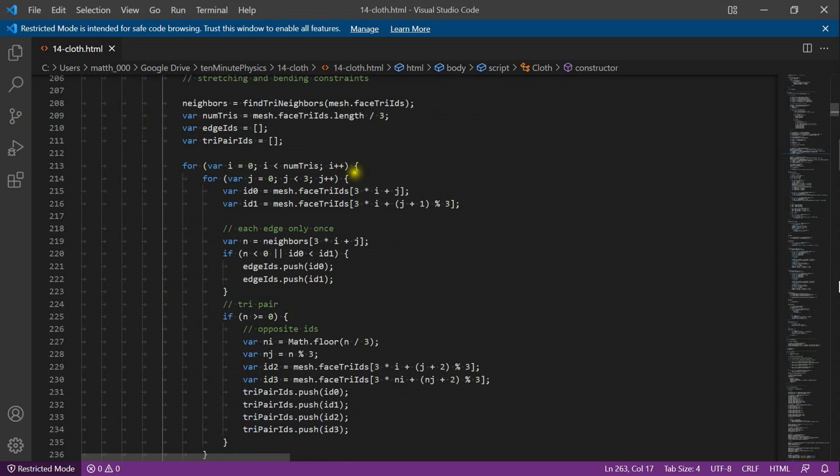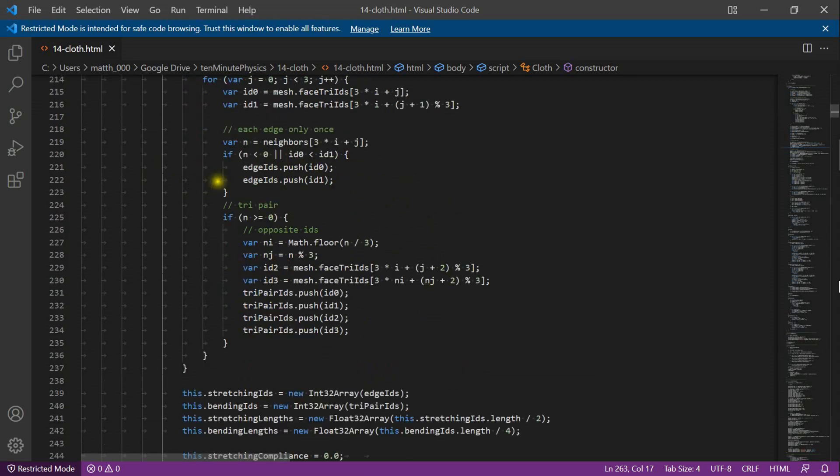Then I run through all the triangles and all their edges. For each edge I create a distance constraint. For each triangle pair I create a bending constraint. I store all the four indices of the triangle neighbors. For a simple bending constraint we only need id2 and id3. However for a future implementation in which I will use the angles between the triangles I will use all four indices.